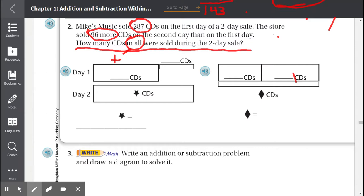We begin by finding the amount of CDs sold on the first day. On the first day, 287 CDs were sold. On the second day, they didn't tell us how many, but they gave us a hint that it was 96 more than the first day. So we're going to put 96 right here. Together, the second day was the first day and 96 combined. We're going to combine the amount of CDs sold on the first day and 96 to get the total for day two. So 287 plus 96.